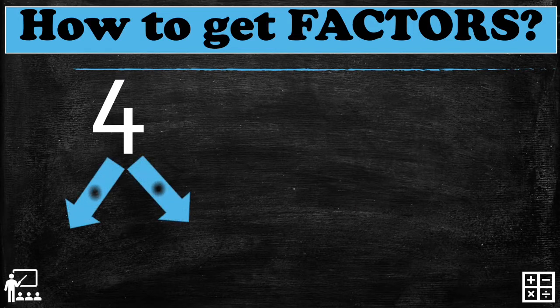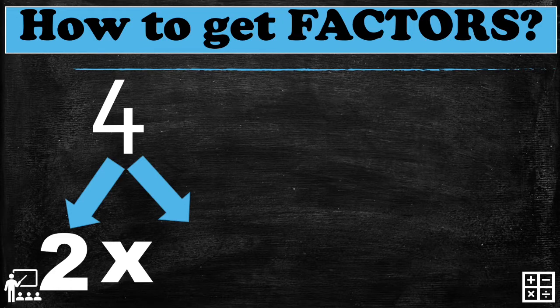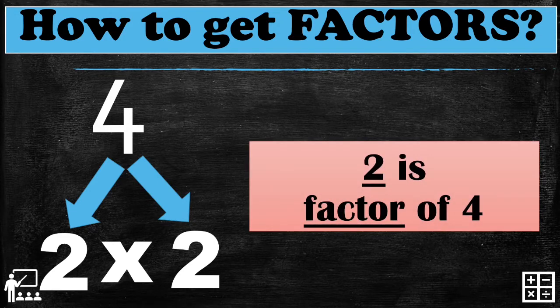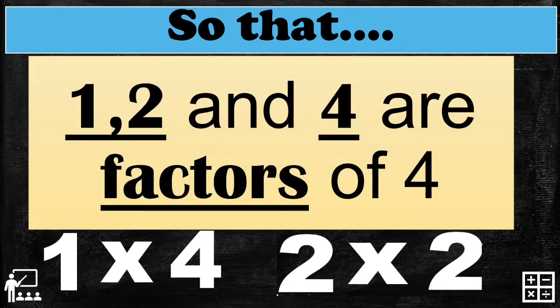What two numbers if we multiply together will give us the product of four? I'll show you one number — two. Can you guess what number we multiply by two to get the product of four? That's correct, two again. Two multiplied by two gives us a product of four. It means two is also a factor of four. To summarize, one, two, and four are factors of four.